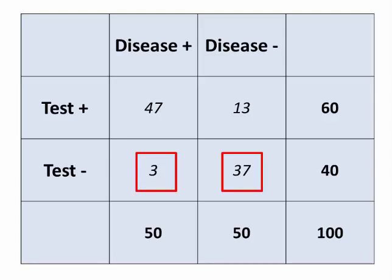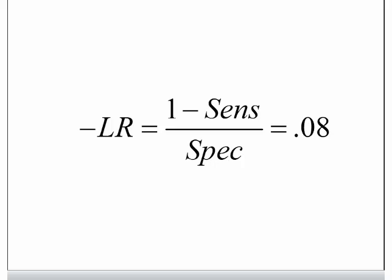Even with only a reasonable specificity, this test results in a pretty low negative likelihood ratio. The box in the lower left of our 2x2 table had 3 subjects — that's 6% of 50, giving us a 1 minus sensitivity of 0.06. And 37 out of 50 subjects was our specificity level. The negative likelihood ratio is (1 minus sensitivity) over specificity, which works out to 0.08. So subjects with the disease were only 0.08 times as likely to test negative as subjects without the disease — or 92% less likely.